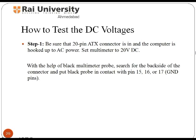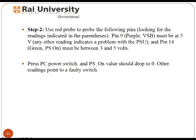To test the DC voltages, follow these steps to measure the DC voltage of a laptop. First, be sure that the 20-pin ATX connector is connected and the computer is hooked up to AC power. Now set your multimeter to 20 volts DC. Then search for the back side of the connector and put the black probe in contact with pins 15, 16, and 17, which are ground pins. Using the red probe, measure the voltage of pin 9 — the purple VSP — which must be at 5 volts, and pin 14 must be between 3 and 5 volts.